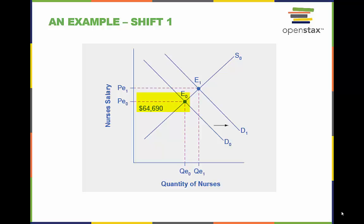As demand for services increased, the demand curve shifts to the right from D0 to D1, and the equilibrium quantity of nurses increases from QE0 to QE1. The equilibrium salary increases from PE0 to PE1.